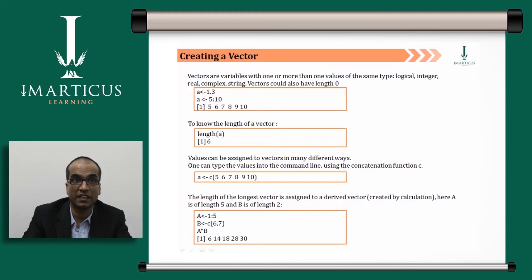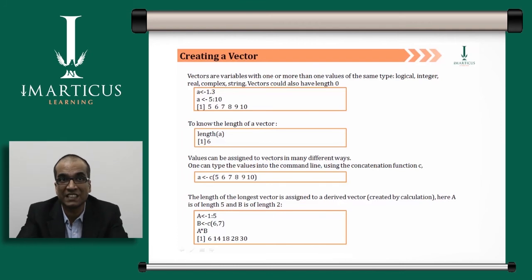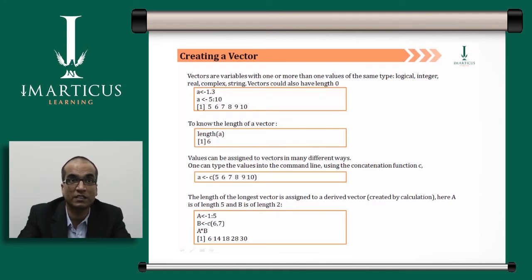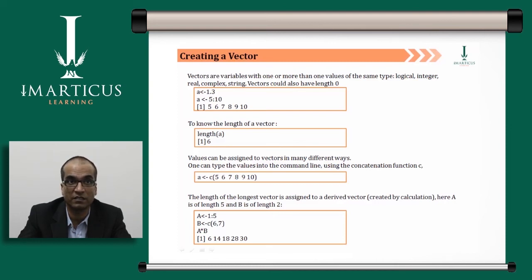The c() function combines values — for example, a <- c(5, 6, 7, 8, 9, 10) — where elements are separated by commas. This produces exactly the same result as a <- 5:10. There are different routes to achieve the same thing in R.